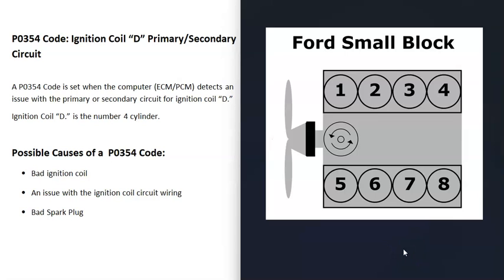So basically just Google your engine cylinder locations or firing order. Look at Google images and usually you can find it on there and just find the number four cylinder. And that's going to be the one with ignition coil D.